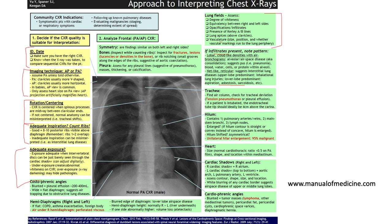Blurring of any cardiac border suggests airspace disease of the upper or middle lung lobes. Look at the cardiophenic angle — if it is blunted, consider a tumour mass like lymphoma or other mediastinal tumours, pericardial fat, pericardial cysts, cardiophenic space varices, or diaphragmatic hernia.